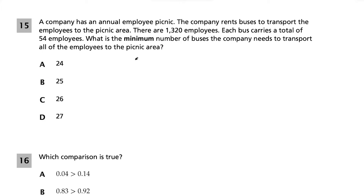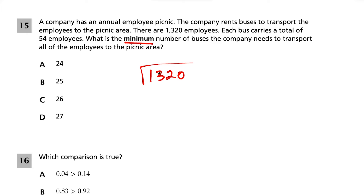Question 15. A company rents buses for 1,320 employees, with each bus carrying 54 employees. What is the minimum number of buses needed? We do 1,320 ÷ 54. We think of rounding 54 to 50 to estimate. 54 goes into 132 about 2 times; 54 × 2 = 108.